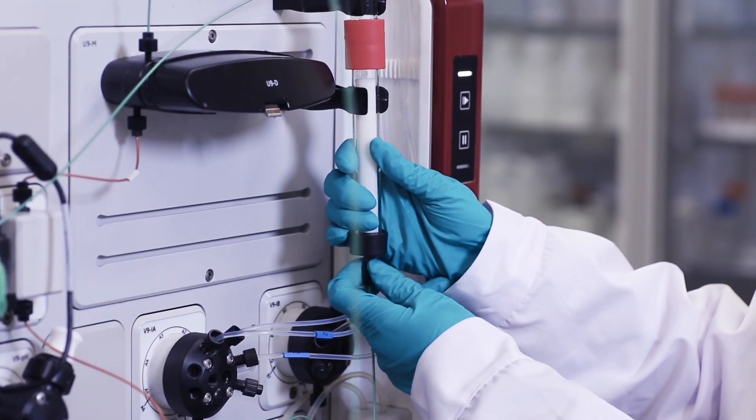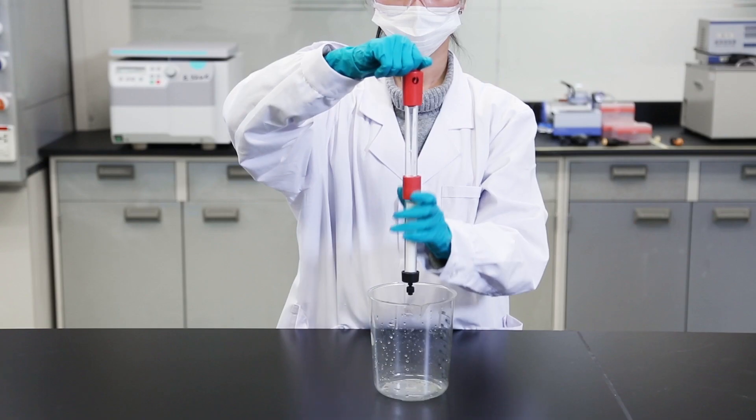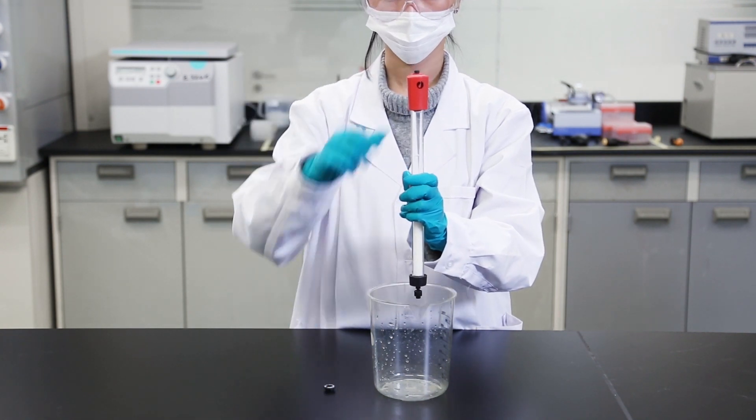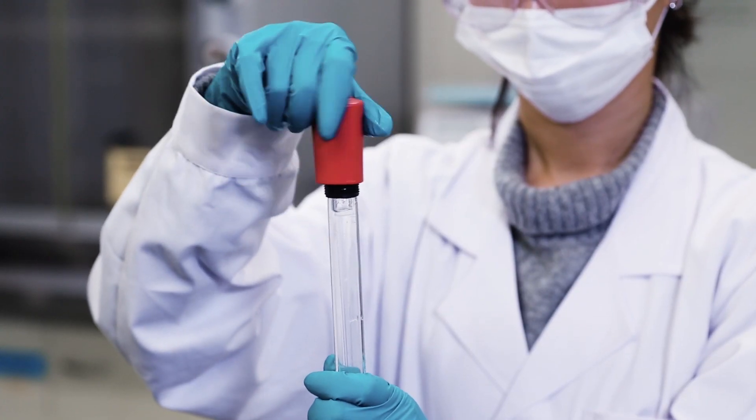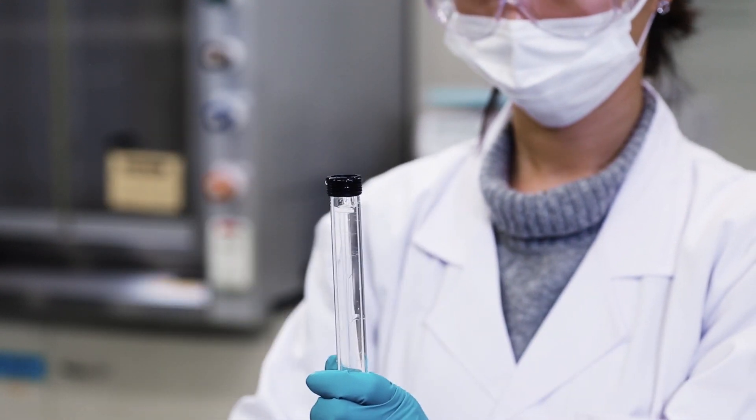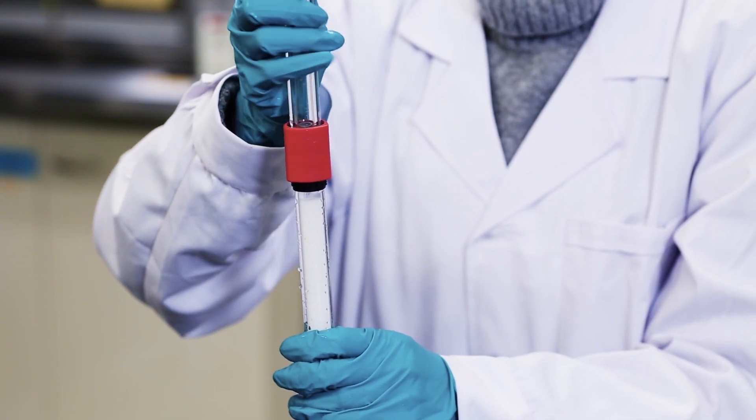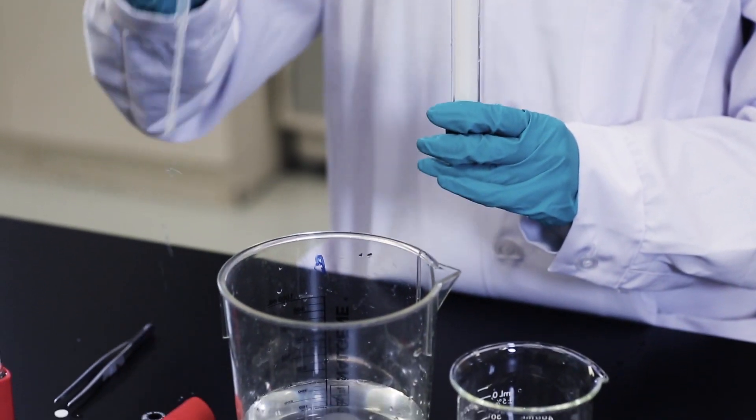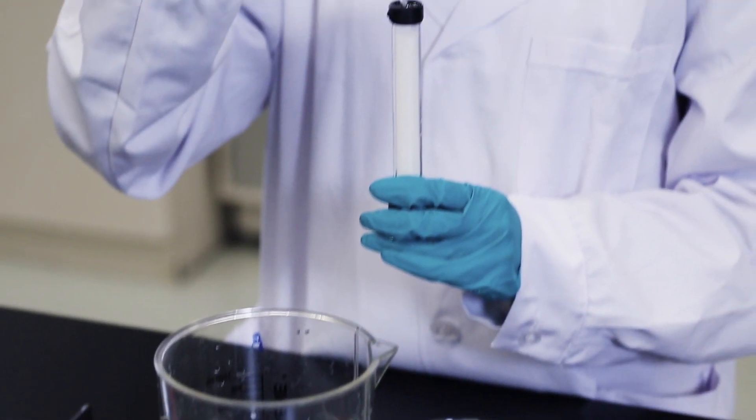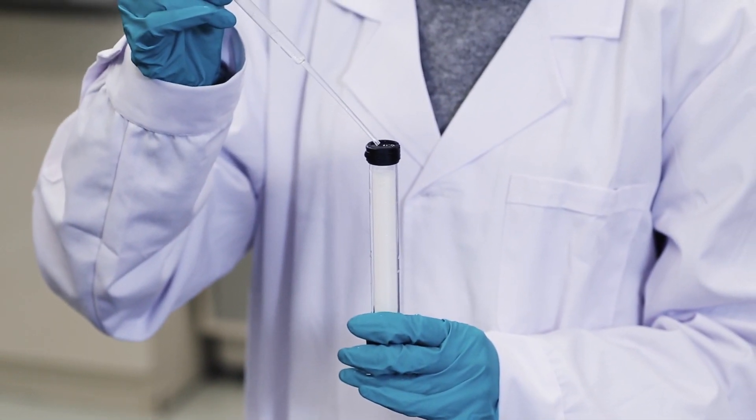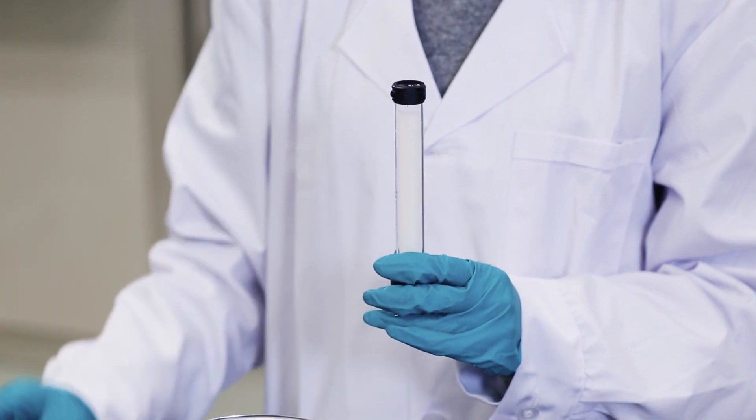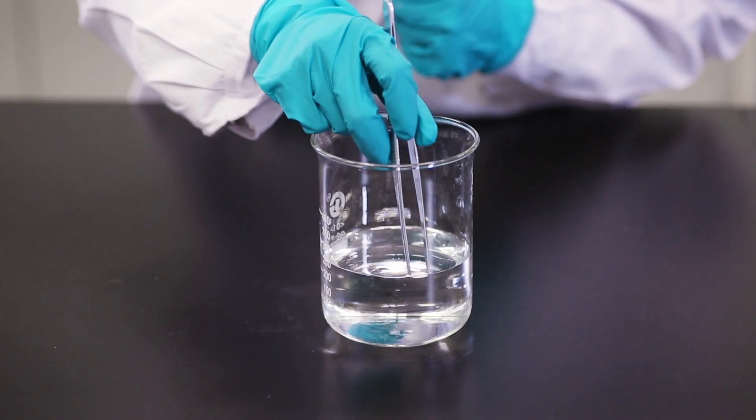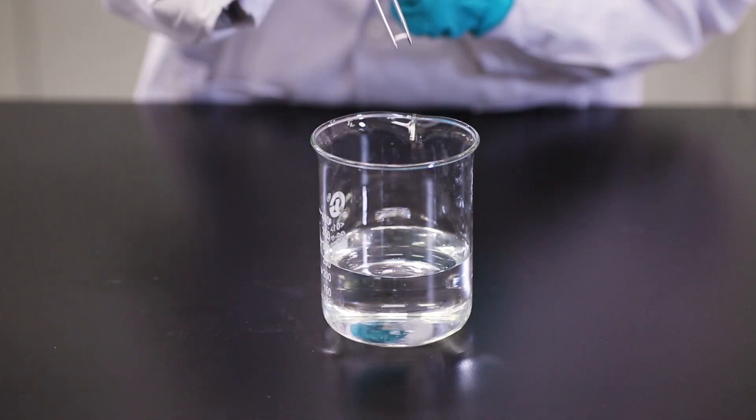Remove the column from the stand. Detach the column from the reservoir over a beaker. Remove the filter and add some packing solution to the top.